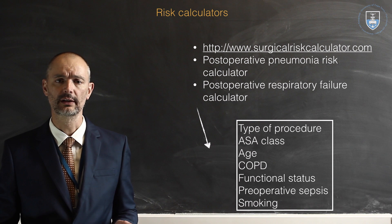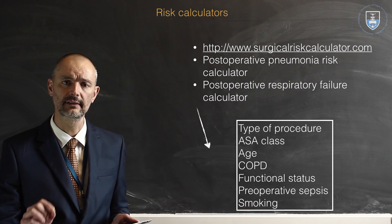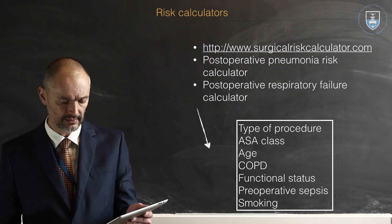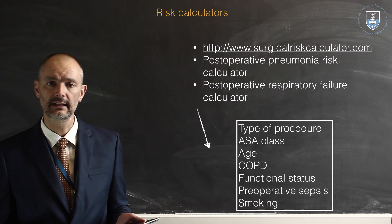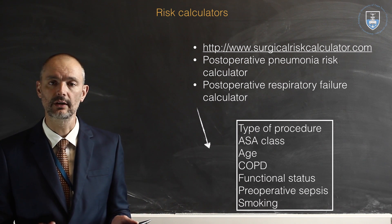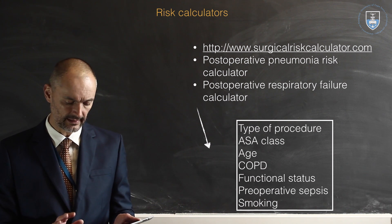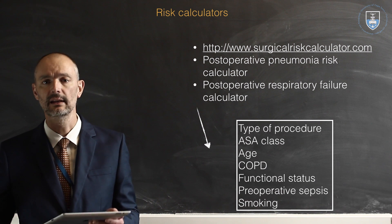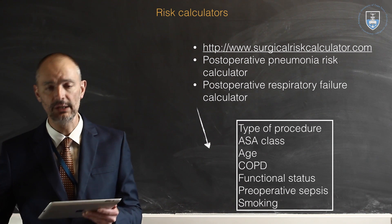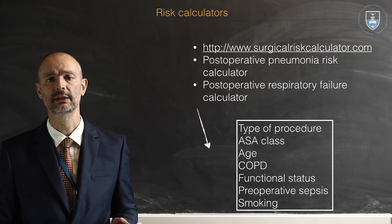Finally, risk calculators. Gupta et al. did a lot of work — they looked at all the VA databases in the United States and more recent complication databases to identify risk factors predictive of post-operative pneumonia and respiratory failure. The factors they found include type of procedure, ASA class, age, existence of COPD, functional status, pre-operative sepsis, and smoking. Visit www.surgicalriskcalculator.com — you can download calculators as apps or use it online. You fill in the data and it gives you the risk of a patient developing pneumonia or respiratory failure. It at least identifies the patient at risk so you can monitor them better and take better care of them — it's risk management in these patients.